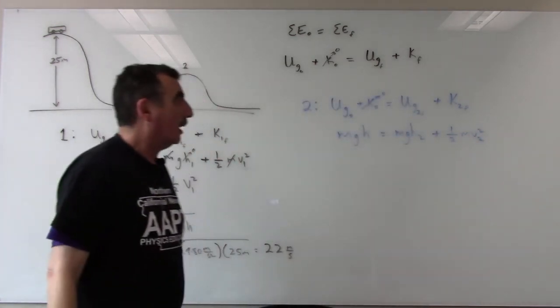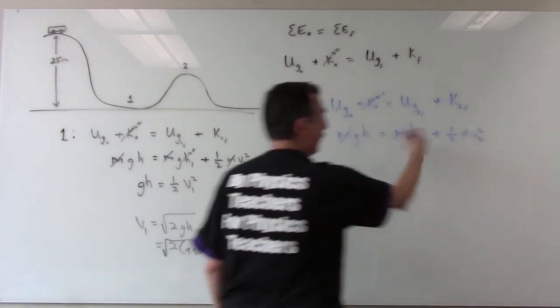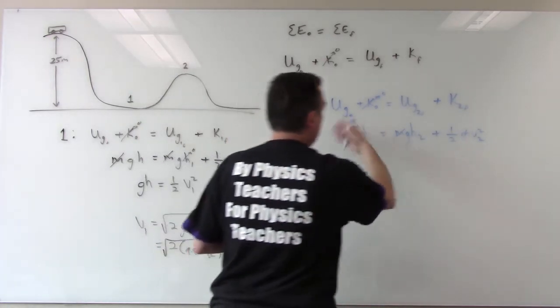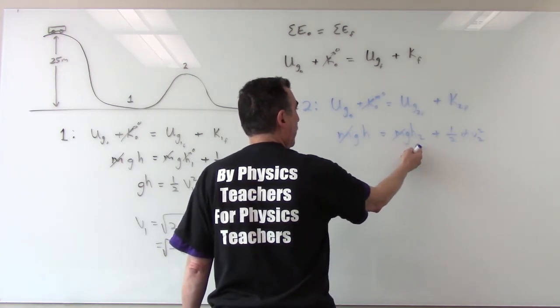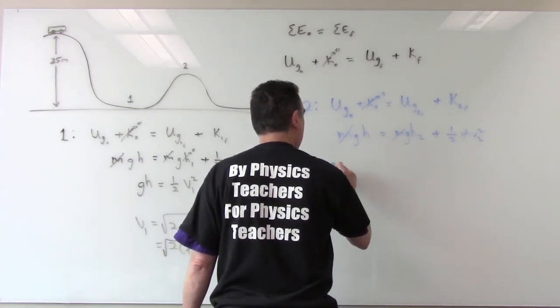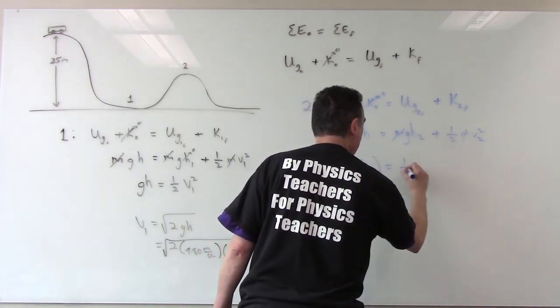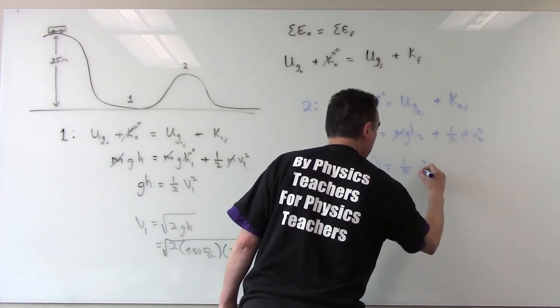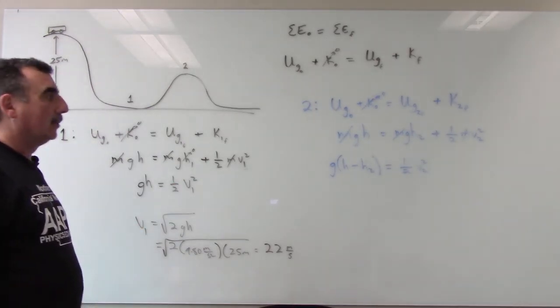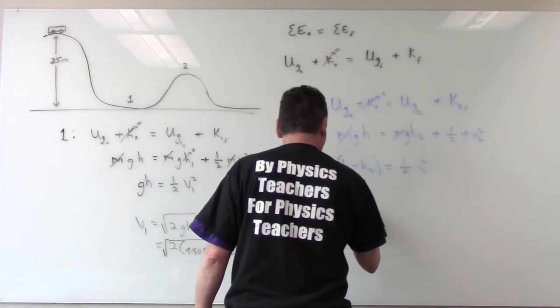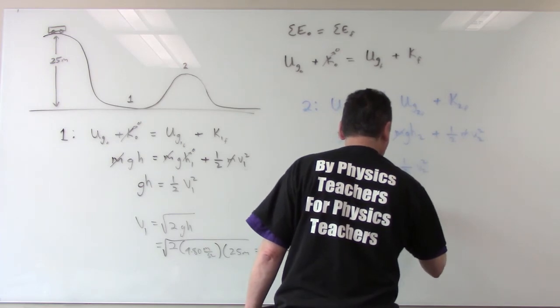Again what's sweet about these problems is that the mass cancels out. You can factor it out from the right side divided out completely from both sides. What's going to happen here is this is going to subtract from this side so I'm going to factor out g and I have h minus h2 equals 1 half v squared at position 2. To solve this is much like 1. In this case v at position 2 is going to equal 2g h minus h2 square root.